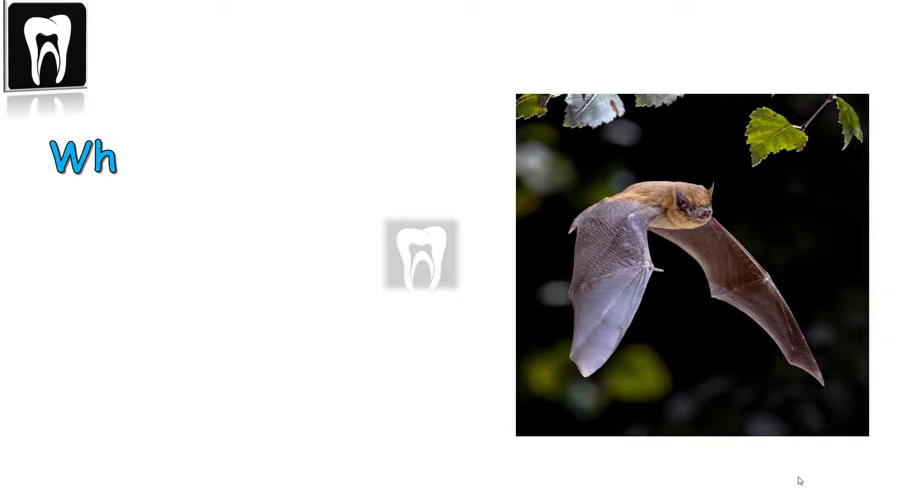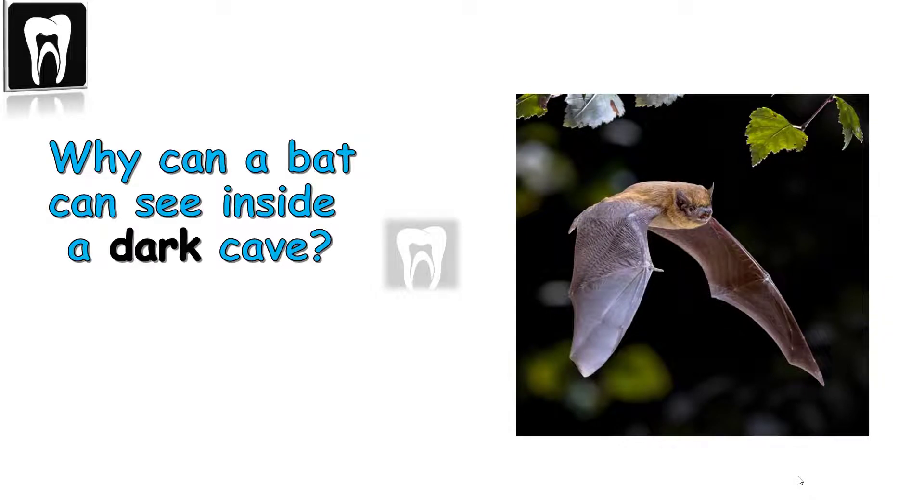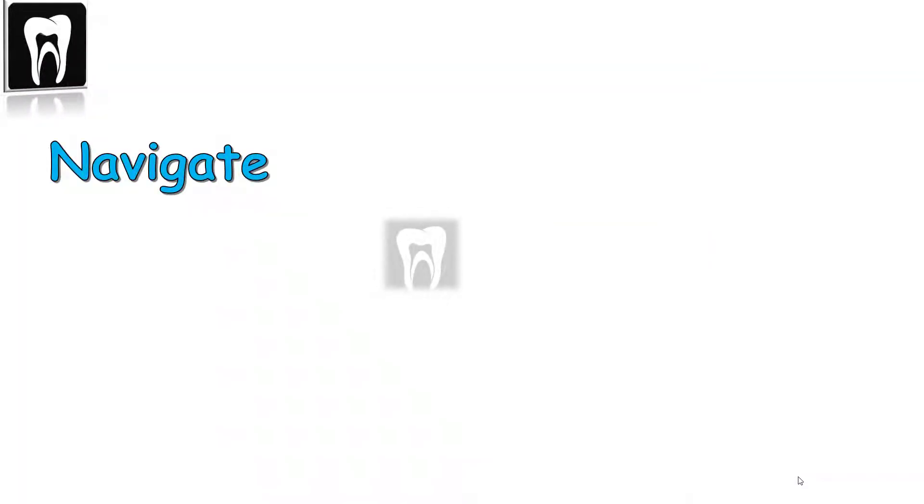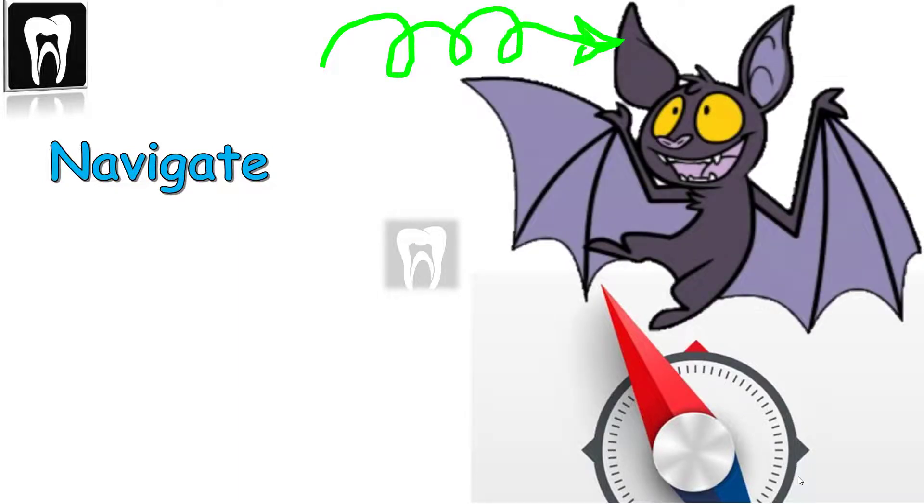Have you ever wondered why a bat can see inside a dark cave even when their eyes are shut? They can navigate at incredible speeds. This is because the bat's fly is guided by its ears, so they can see with their ears.